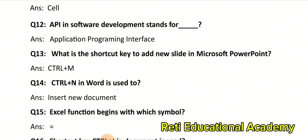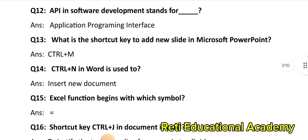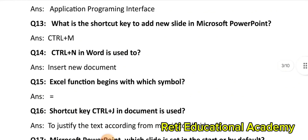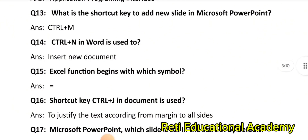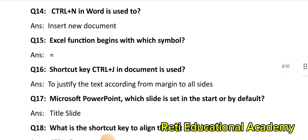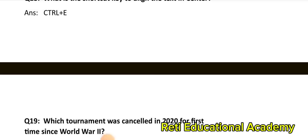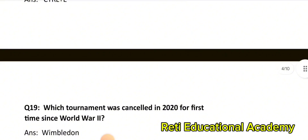Question number 15: Excel function begins with which symbol? The correct answer is: Equal (=). Question number 16: Shortcut key Ctrl + J in a document is used to: Justify the text from margin to all sides. Question number 17: In Microsoft PowerPoint, which slide is set by default at the start? Title Slide. Question number 18: What is the shortcut key to align the text in center? The correct answer is: Ctrl + E. Question number 19: Which tournament was canceled in 2020 for the first time since World War 2? The correct answer is: Wimbledon.